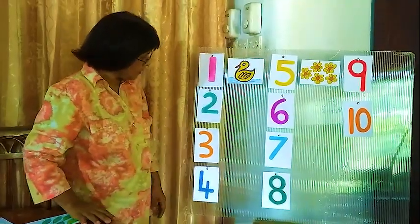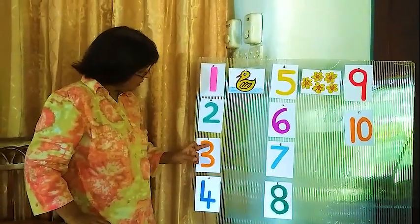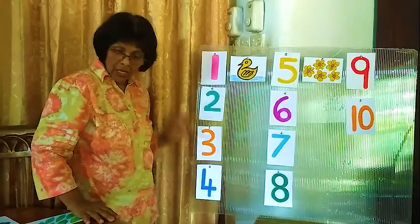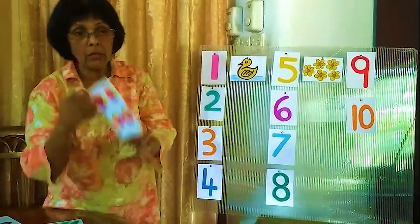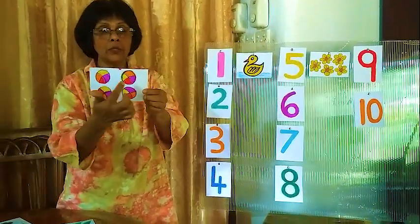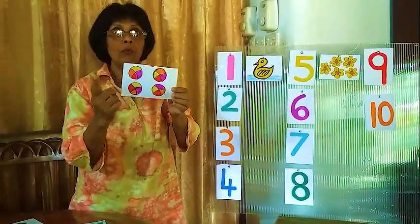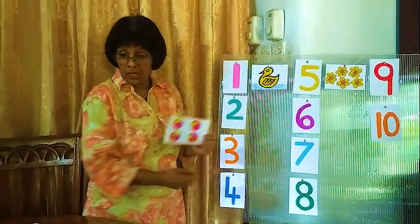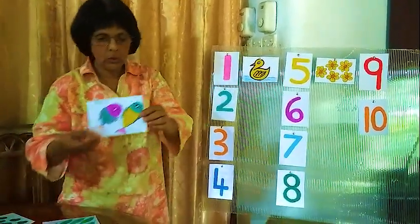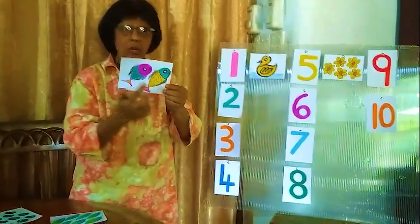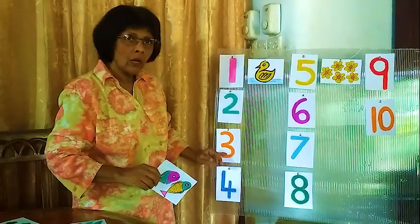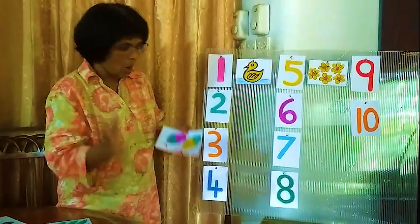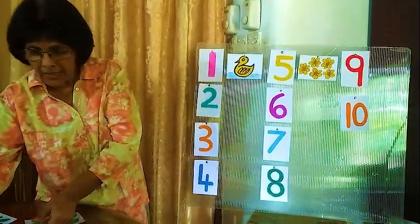Now we will go to another number — number 3. So we have to find 3 pictures. How many birds here? 1, 2, 3, 4 — 4 balls. Is this correct? No, this is 3. Wrong. This is 3, we have to find 3 pictures.